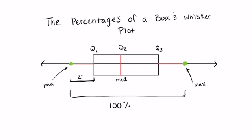That means 25% of my students or one-fourth of my class will fall between the minimum score and Q1.